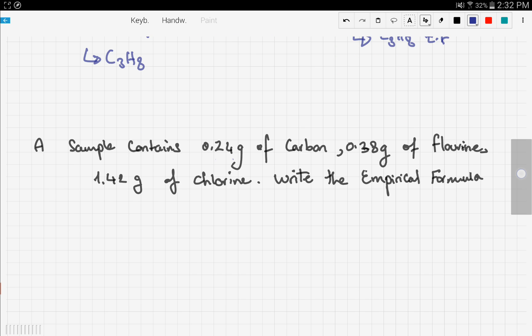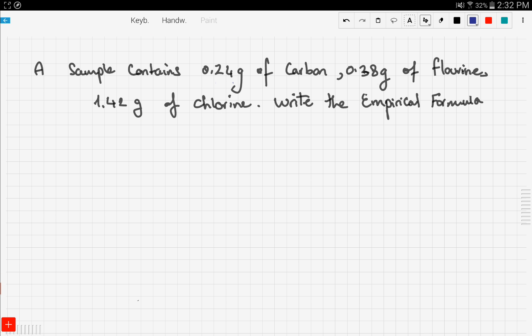Let's demonstrate this by an example. A sample contains 0.24 grams of carbon, 0.38 grams of fluorine, and 1.42 grams of chlorine. Write the empirical formula. The first thing you need to do is list your elements.